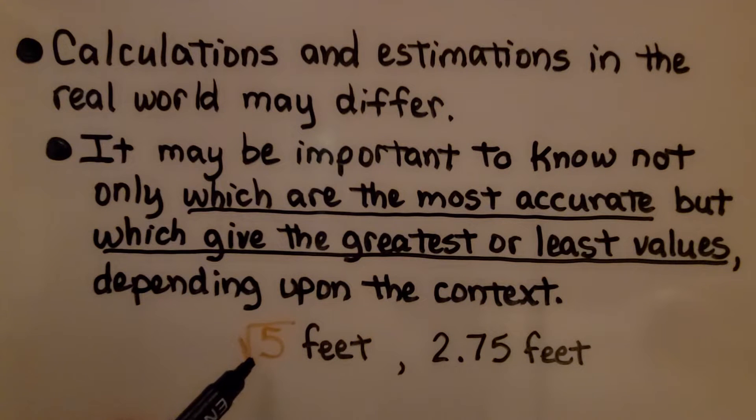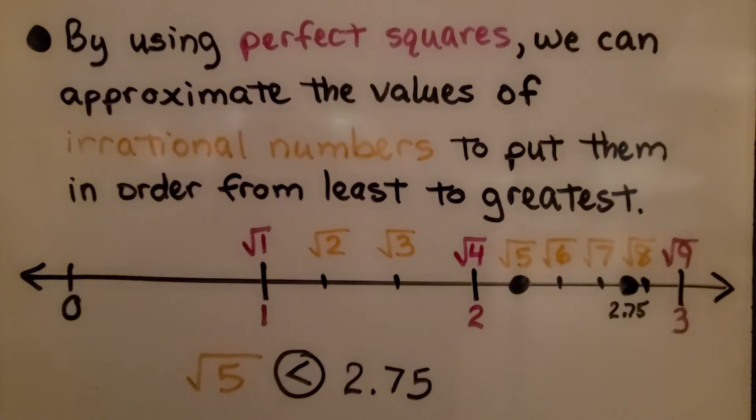If we have square root of 5 feet and 2.75 feet, which one's shorter, which one's longer? Remember what we've learned in 1.3a and 1.3b. By using perfect squares, we can approximate the values of irrational numbers to put them in order from least to greatest, or maybe even greatest to least.